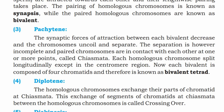During diplotene, the synaptic forces of attraction between each bivalent decrease and the chromosomes uncoil and begin to separate. The separation is incomplete, and paired chromosomes remain in contact at one or more points called chiasmata. Each bivalent is composed of four chromatids and is therefore known as a bivalent tetrad.